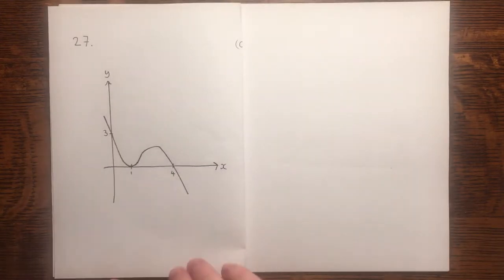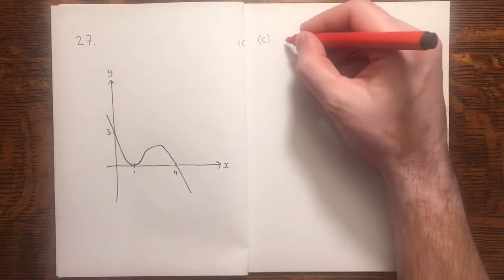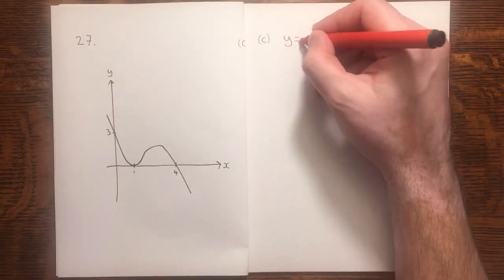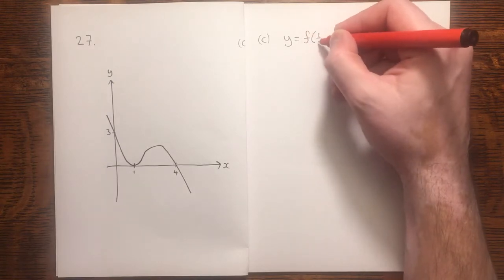Finally, in part c, we're going to take a different transformation. We are given the transformation y equals f of a half x.